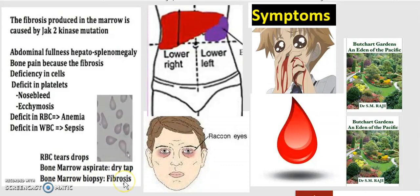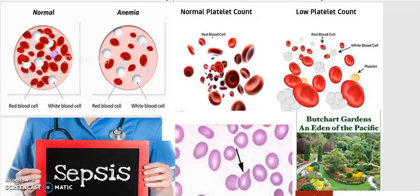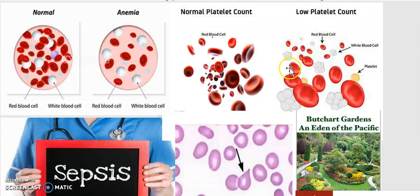A biopsy will most often reveal fibrosis. In a normal bloodstream you see normal cell counts, whereas in anemia there is a much lower level of red blood cells. Similarly, you can compare a normal platelet count to a low platelet count. Remember that this disease can lead to sepsis, and the red blood cells will generally have a teardrop shape.